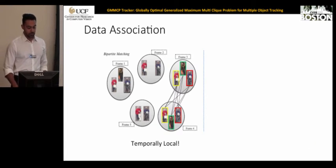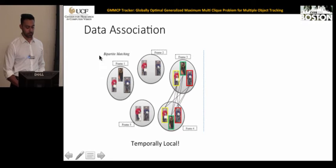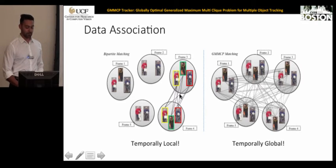Looking back at the literature, one way of formulating data association is to consider only a few frames during association. For example, bipartite matching is a popular method for solving the data association problem, which is temporally local and only considers two frames. Here we consider many more frames — every detection in one frame is connected to all detections in all other frames. Instead of a bipartite graph, we deal with a K-partite complete graph, making our method temporally global.